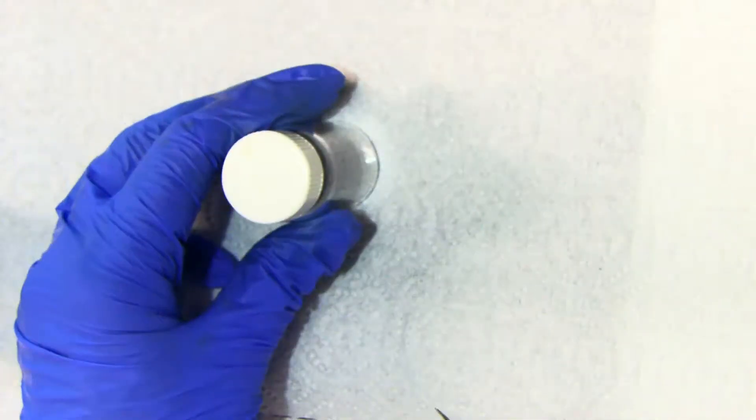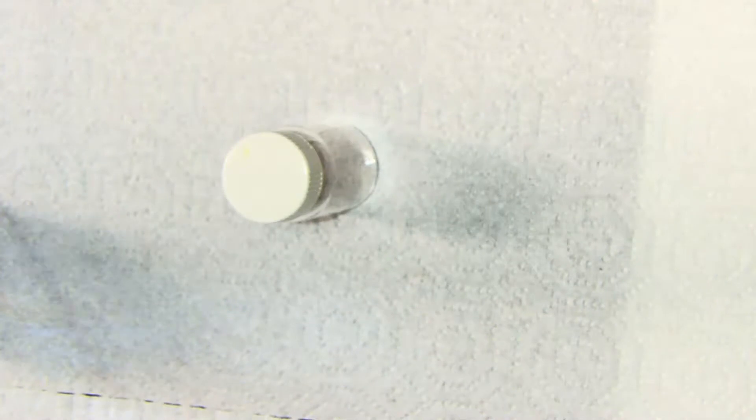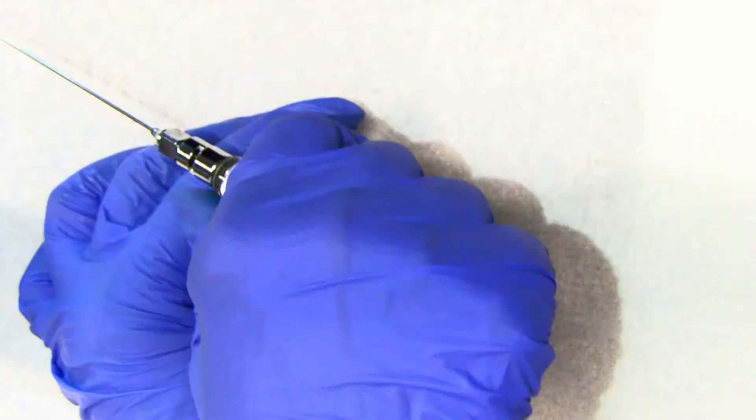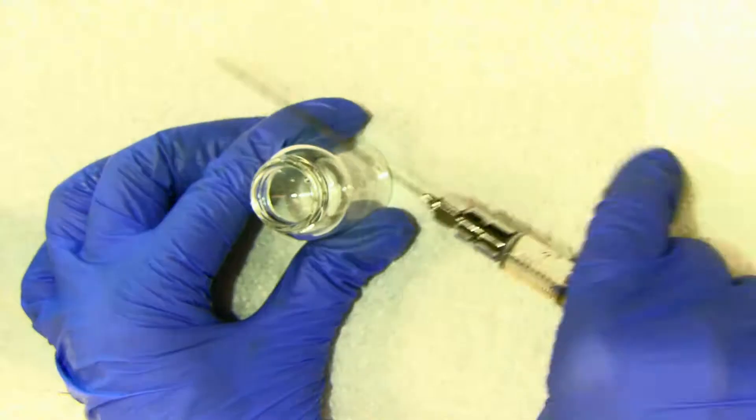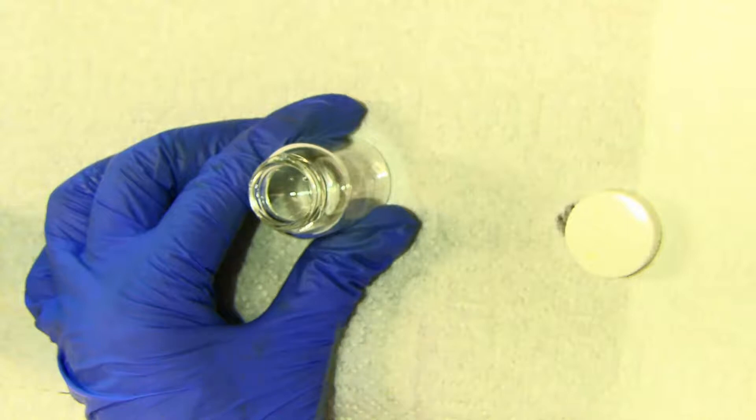Now what I do once I have the liquid in my syringe is deliver it into the oven-dried capped vial that was dried for you before the beginning of the lab.